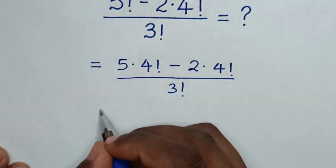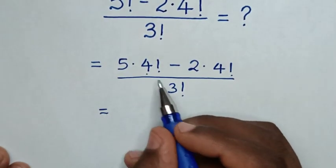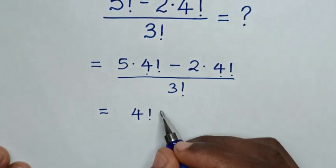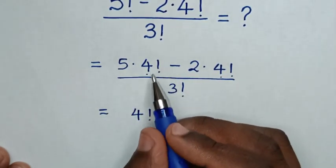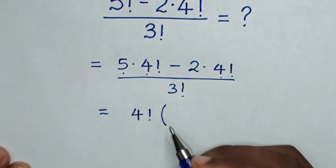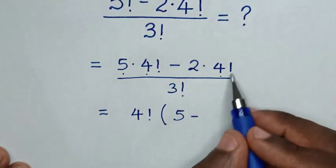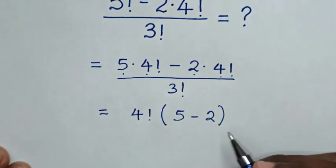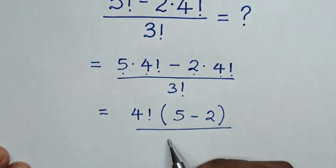Then it will be equal to - in here 4 factorial is common, so we take 4 factorial out of bracket. Then this divided by this is 5, then minus this divided by this is 2, then bracket over 3 factorial.